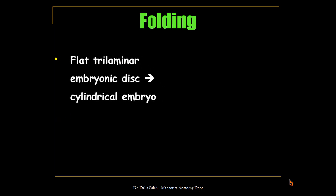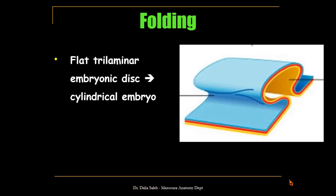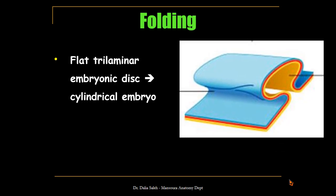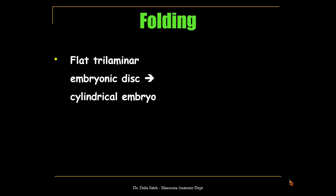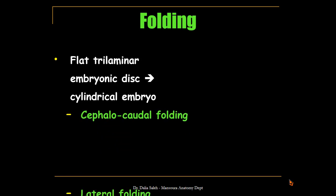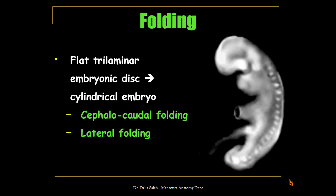As a result of folding, the flat trilaminar embryonic disc will change into a cylindrical embryo. The folding occurs in two directions: in a cephalocaudal direction and in a lateral direction. You can see a side view of an embryo — these are the somites and this is the neural tube. This is the brain and this is the rest of the neural tube, and you can see that the embryo bends in a craniocaudal direction.